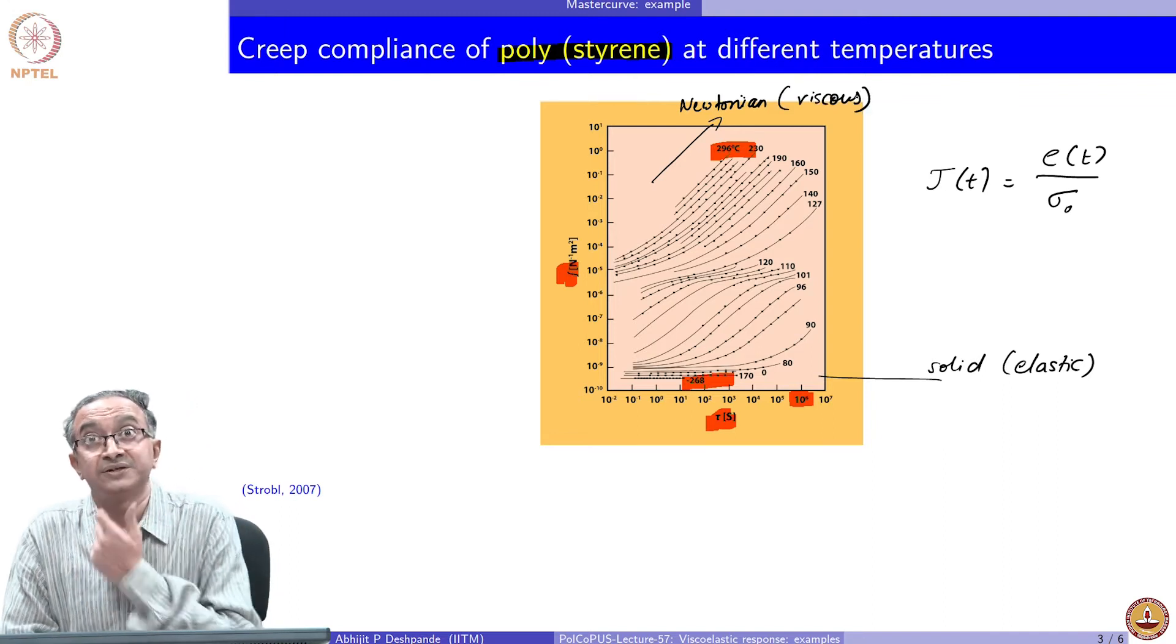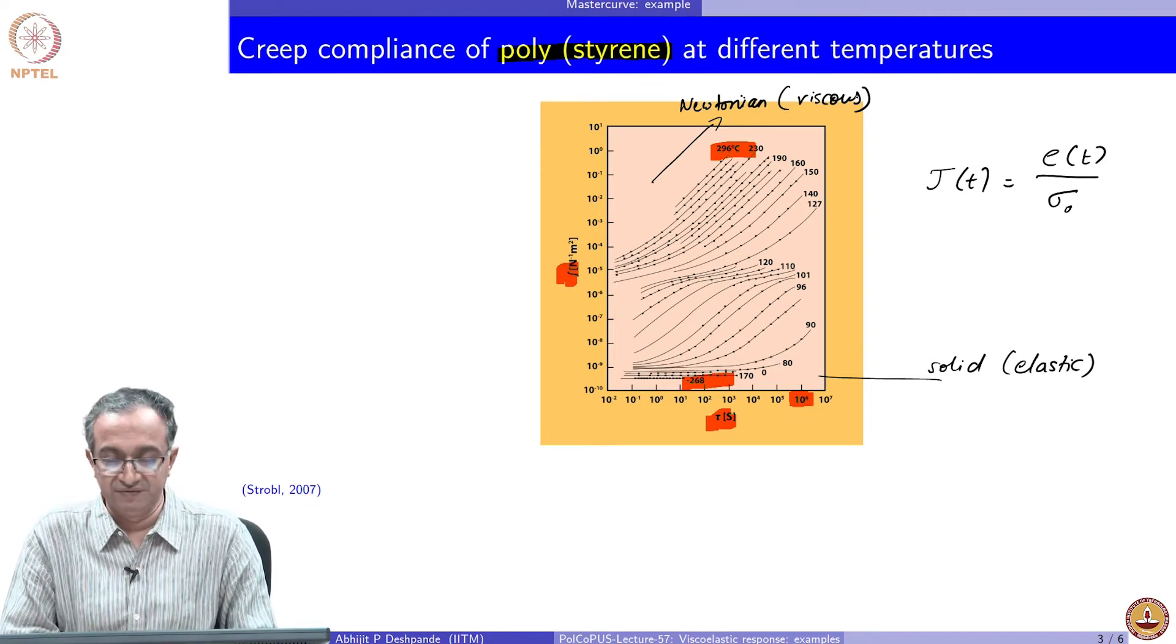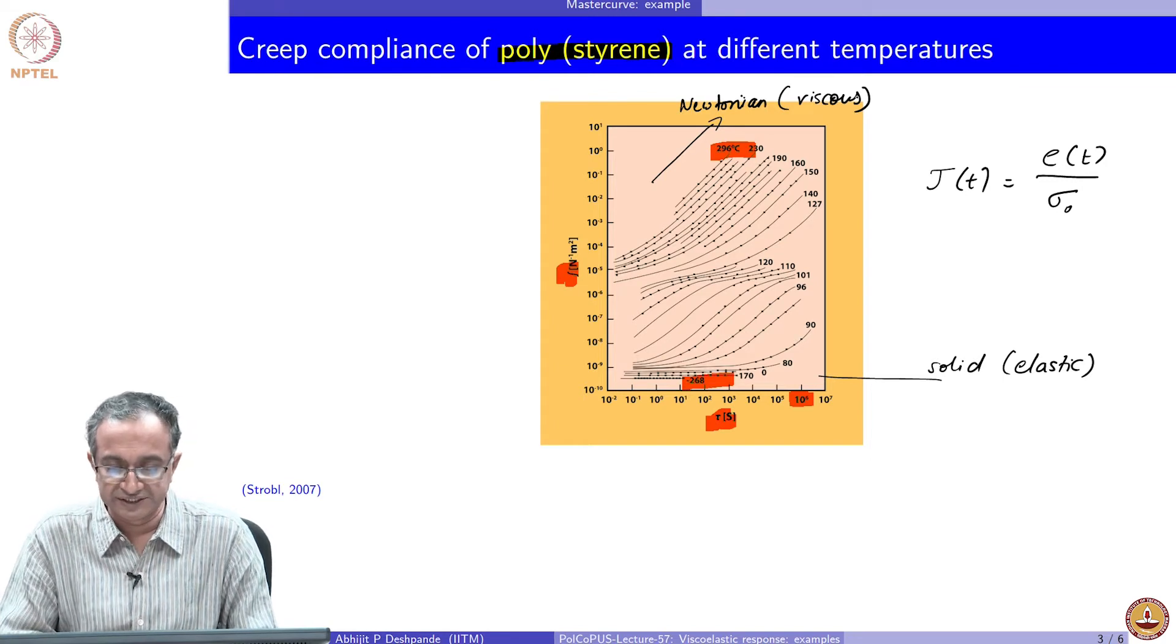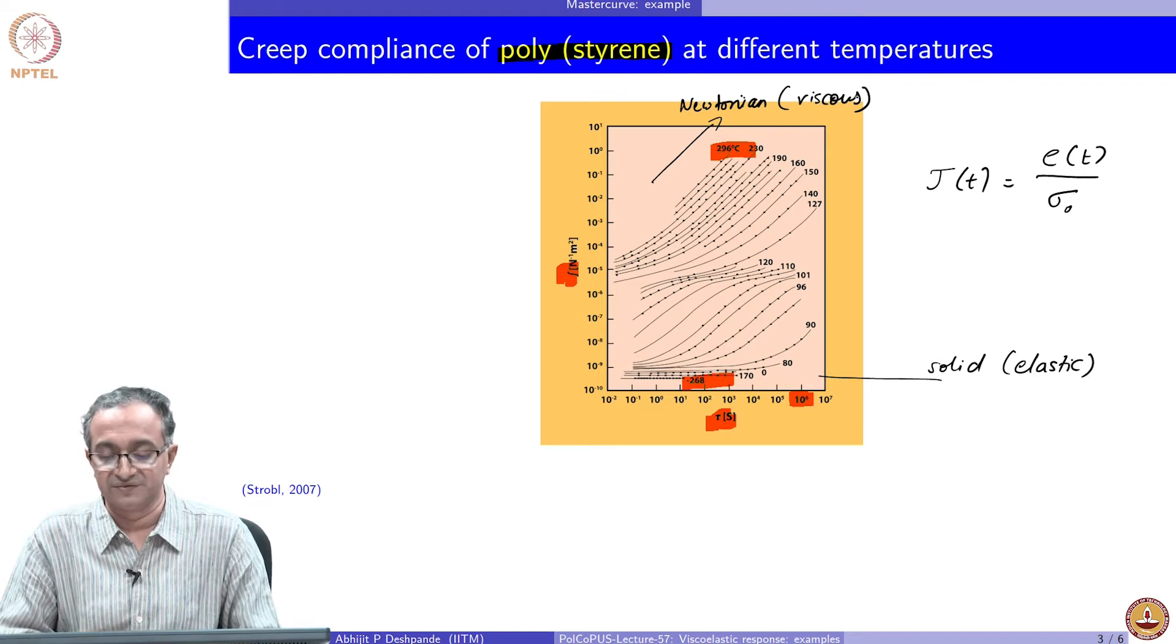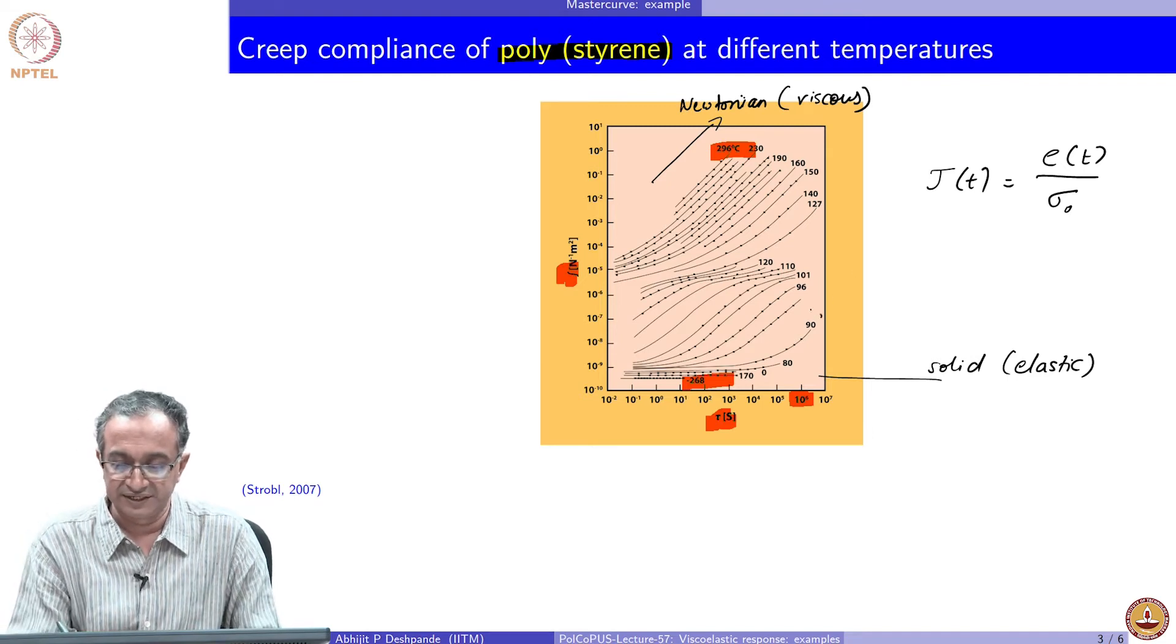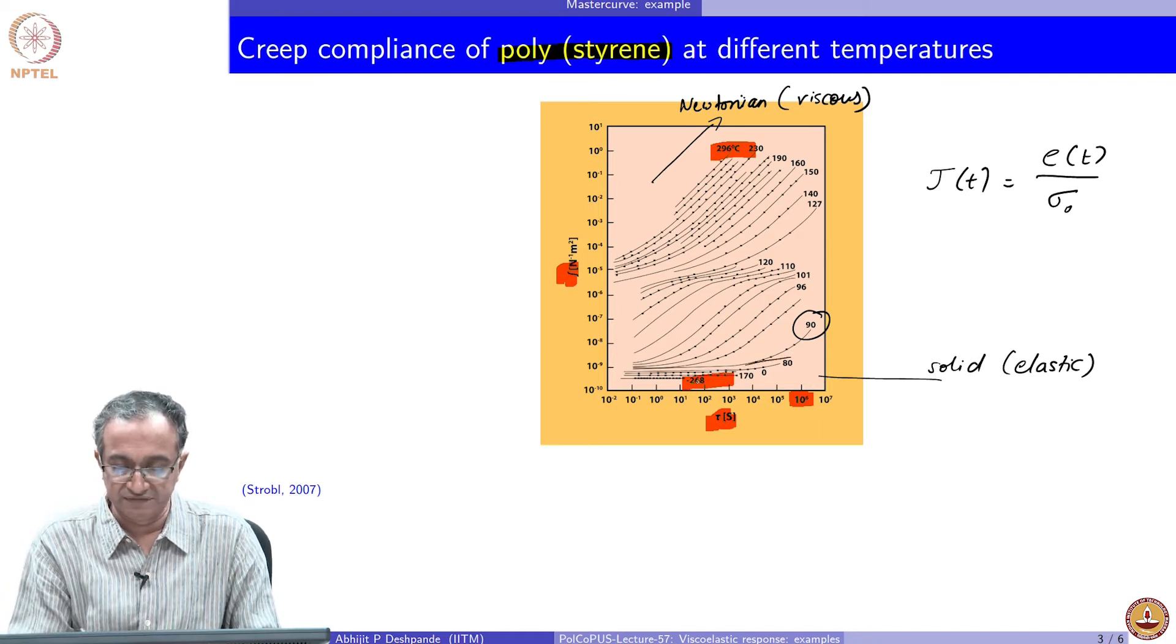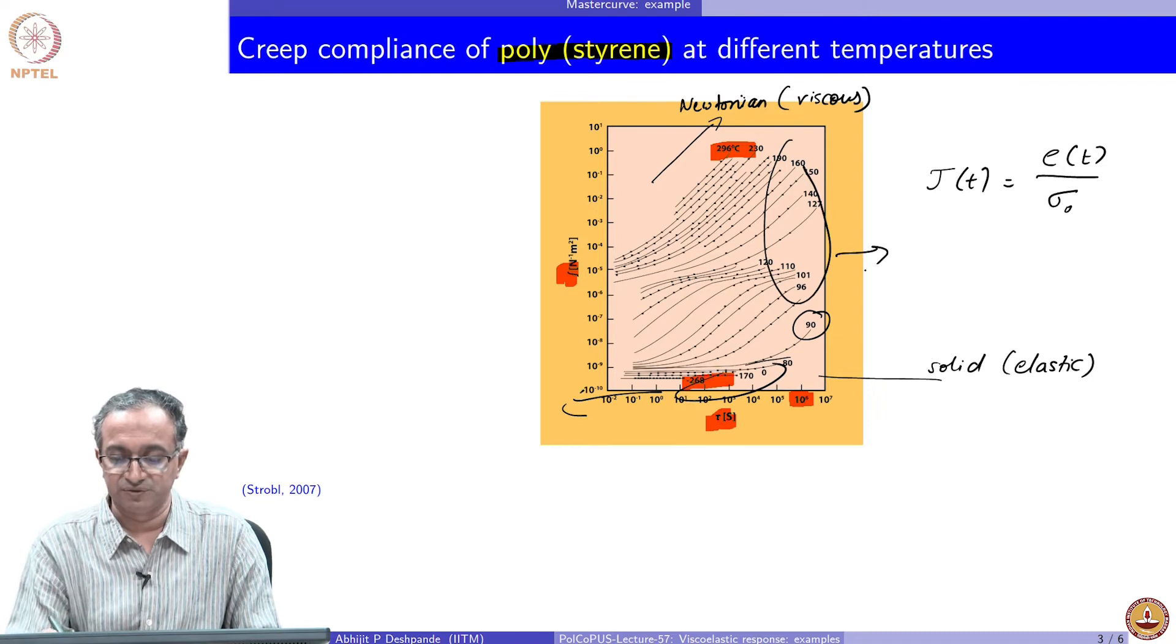Now what we can do is shift these curves. So we can, let us say, pick any one of the temperatures as our reference temperature and then start shifting the curves. So let us say, if we are interested in looking at the material response at 90, then what we can do is these curves can be shifted to the left and all these curves can be shifted to the right.